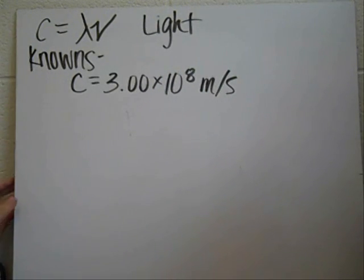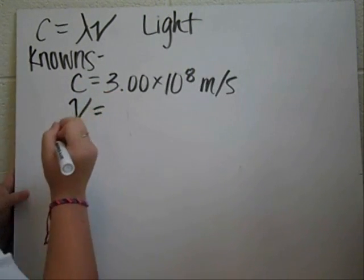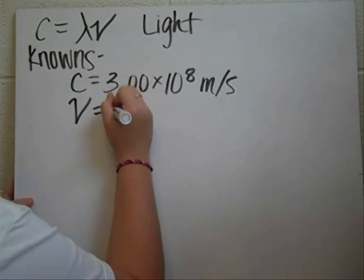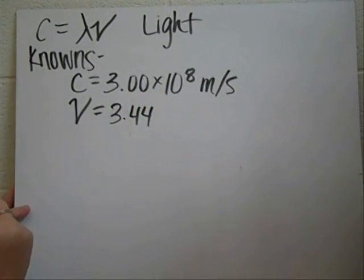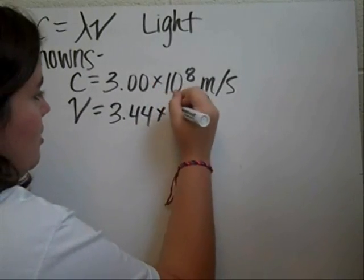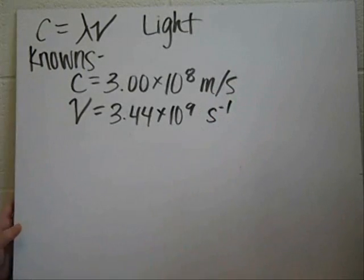And another known we're going to have is nu, which is frequency. And they said that in the equation is 3.44 times 10 to the 9th hertz. But I'm not going to use hertz. I'm going to use inverse seconds, which is basically the same thing.